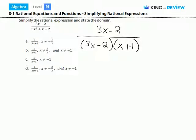There's a 3x minus 2 term in the numerator and the denominator. Therefore, these two terms can cancel out and we're left with 1 over x plus 1.